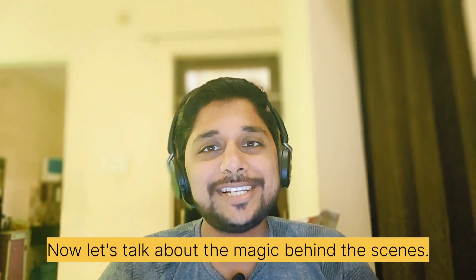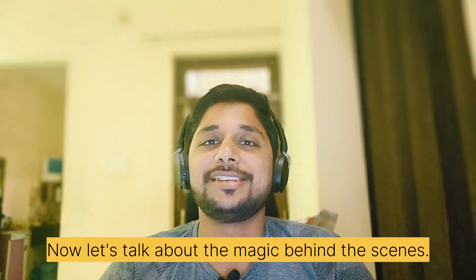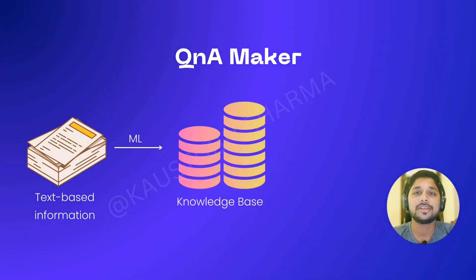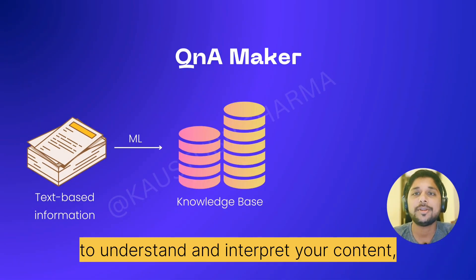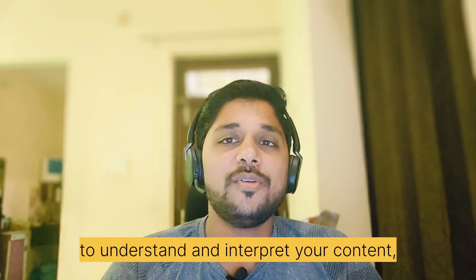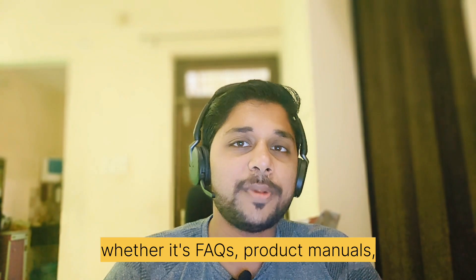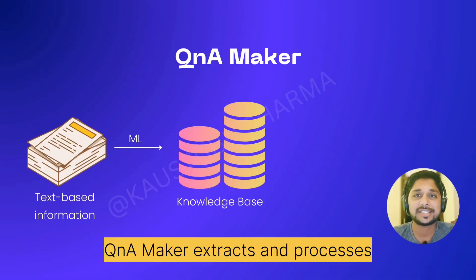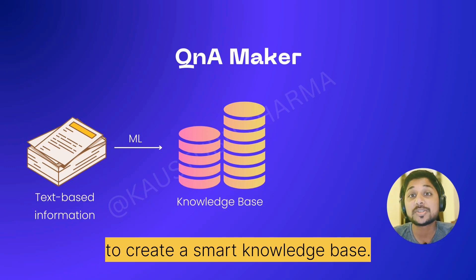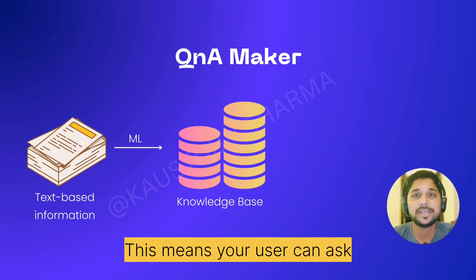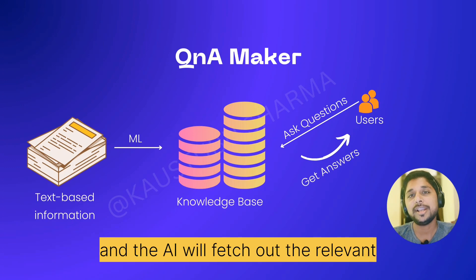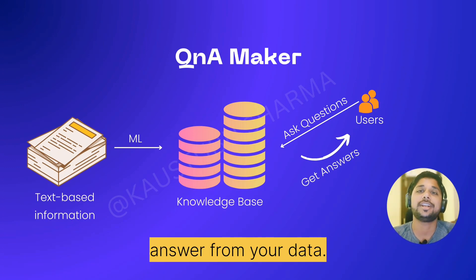Now let's talk about the magic behind the scenes. Q&A Maker uses machine learning algorithms to understand and interpret your content. Whether it's FAQs, product manuals, or any text-based information, Q&A Maker extracts and processes it to create a smart knowledge base. This means your users can ask questions in plain language and the AI will fetch the relevant answer from your data.